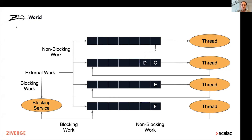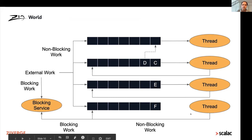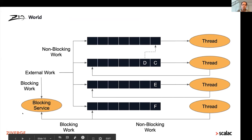Following up on our earlier discussion about the scheduler, one further complication we have to deal with is blocking work. When we have a setup like this with a functional effect system and we're using a limited number of threads to run the work associated with our application, we need to be really careful about pushing blocking work onto that core thread pool — because if we only have four or eight threads and one of those threads is just sitting there waiting for a file handle to be available, that's taking out essentially 25% of the processing capacity of our application.